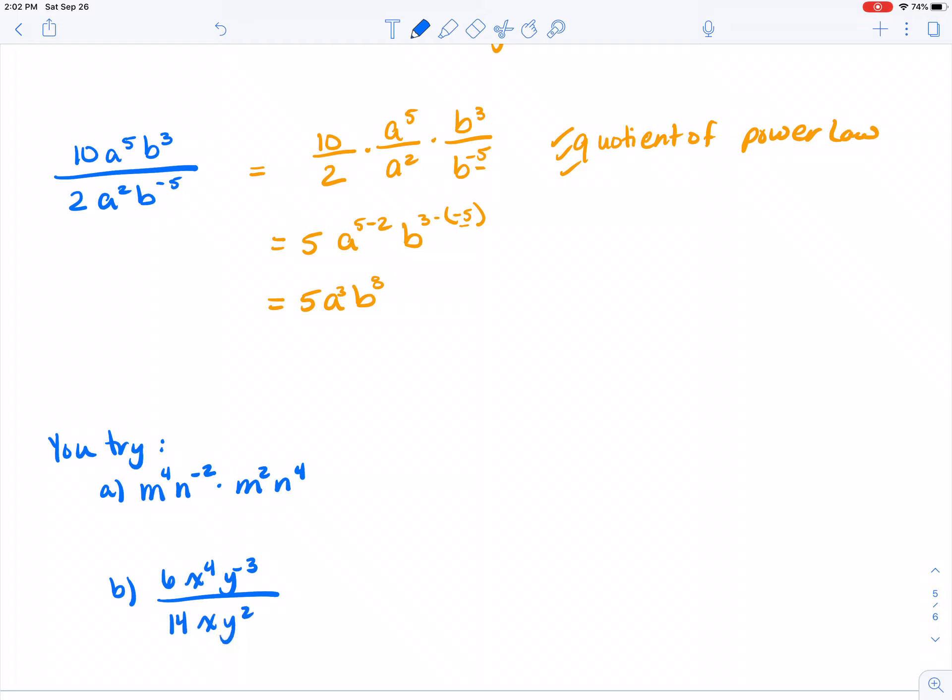Welcome back. For problem a, you should have an answer of m to the 6 n squared. And for problem b, you should have an answer of 3 x cubed divided by 7 y to the 5.